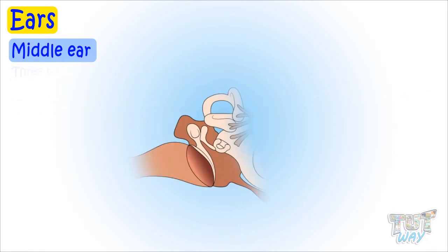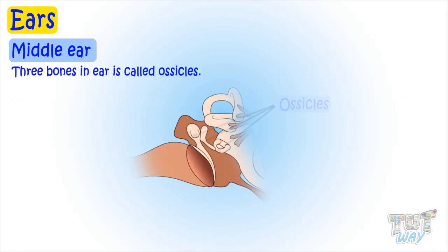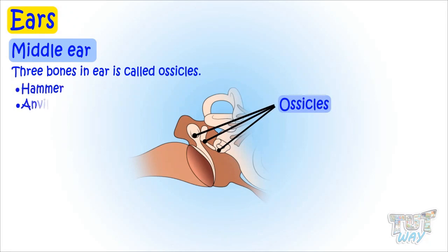The three bones in the middle ear are known as ossicles, and their names are hammer, anvil, and stapes. These are the smallest bones in the human body.